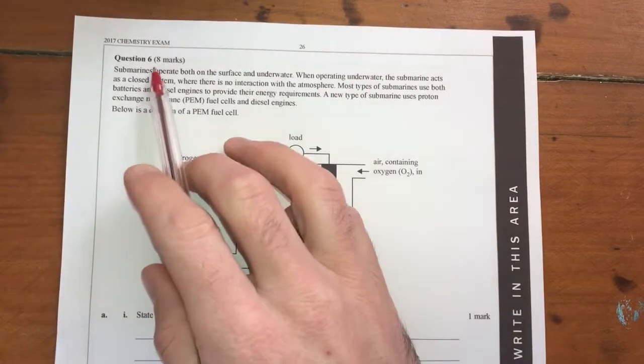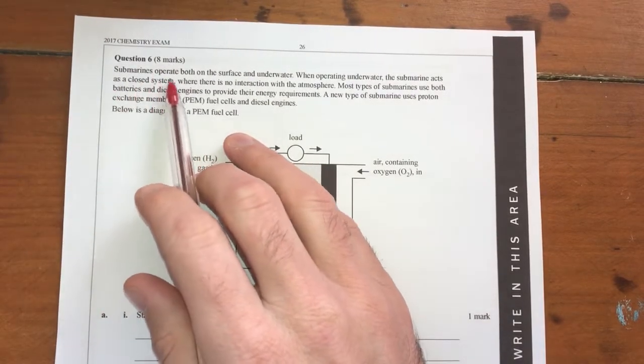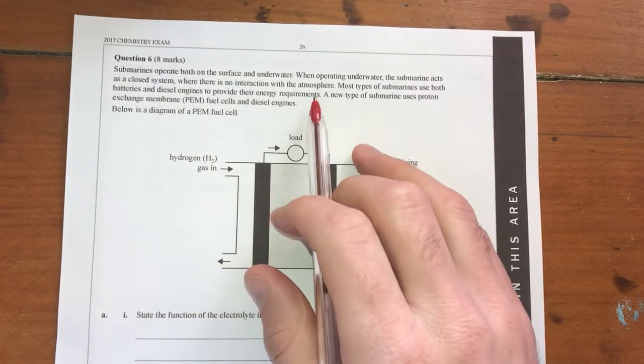And question six. Eight marks for this one. So submarines operate both on the surface and underwater. We're looking at subs.